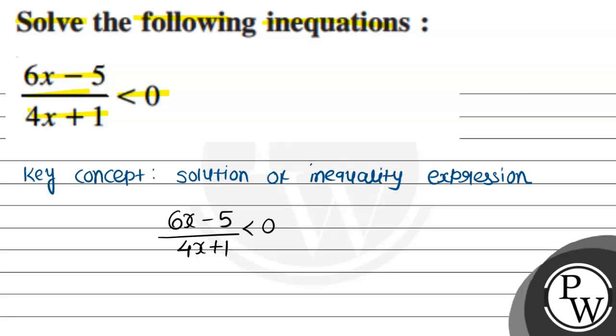Now let's separately find where the x values occur. For this, 6x minus 5 equals 0 implies x equals 5 by 6. And second, 4x plus 1 equals 0 implies x equals minus 1 by 4.